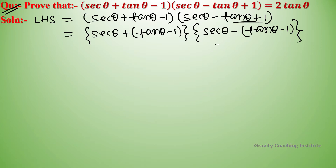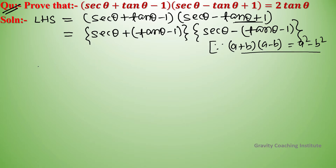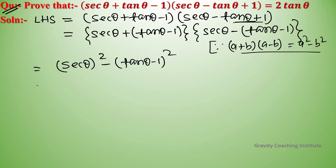Now we will use the identity (a + b)(a - b) = a² - b². Applying this identity: sec²θ - (tan θ - 1)², which equals sec²θ - (tan²θ - 2 tan θ + 1).